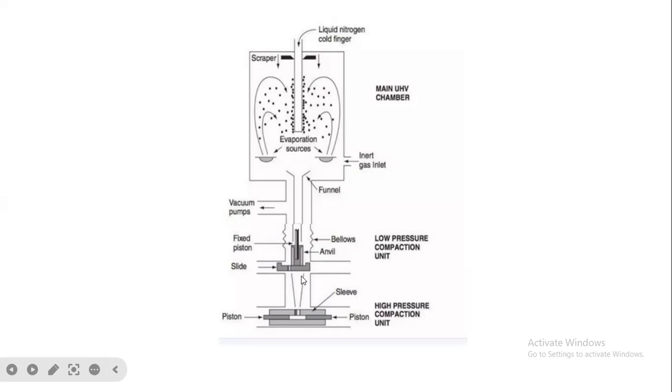This goes into the sleeve. The low pressure compaction unit is at the anvil. The high pressure compaction unit is at the sleeve. This is the main chamber.